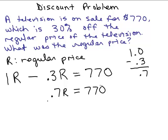And then you could divide by 0.7 and use a calculator if you want. Or check this out, you don't really need a calculator for this. If you multiply the numerator and denominator by 10 here, you're going to move each of these decimals over 1 so that it becomes 7700 over 7. So that will give you $1,100.